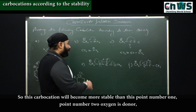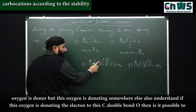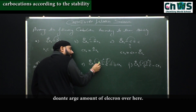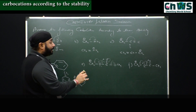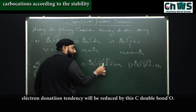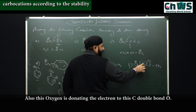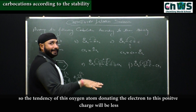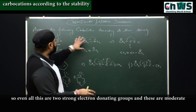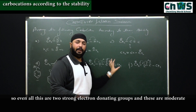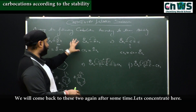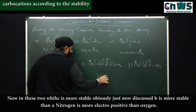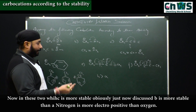Now here, oxygen is the donor — but this oxygen is also donating somewhere else. If this oxygen is donating electrons to the C=O double bond, is it possible for this oxygen to donate a large amount of electron to the positive charge as well? The electron donation tendency toward the positive charge will be reduced by the competing C=O. So the tendency of this oxygen to donate to the positive charge becomes less. These groups with competing C=O donation are moderate donors, while the straightforward +M groups are strong. So among the two being compared (E and F): this oxygen is giving more electron to the positive charge, this oxygen is giving less. Obviously E is more stable than F.